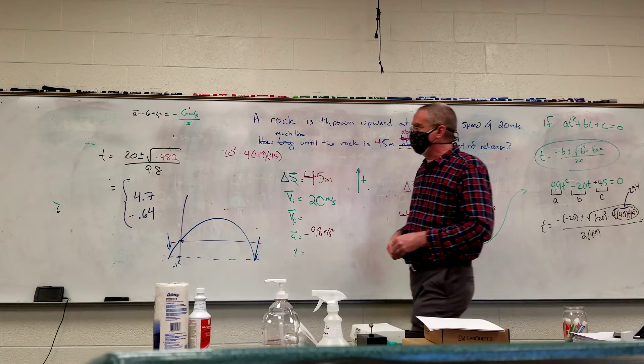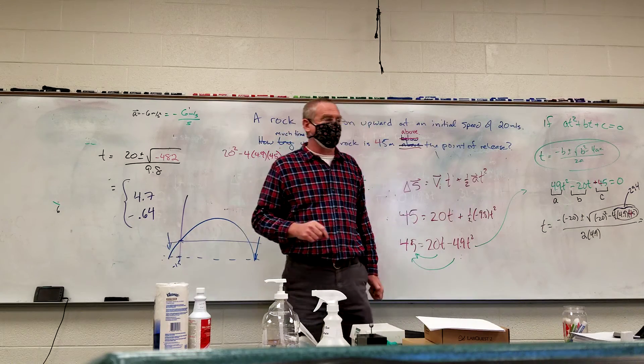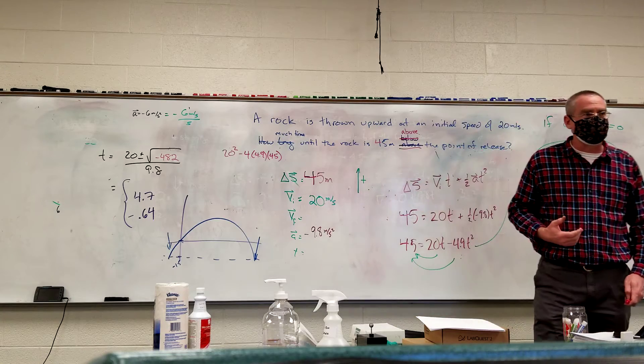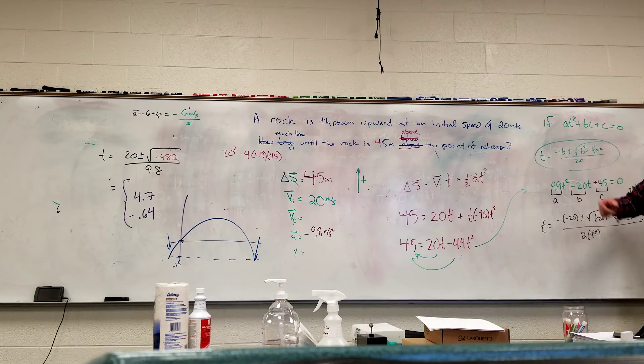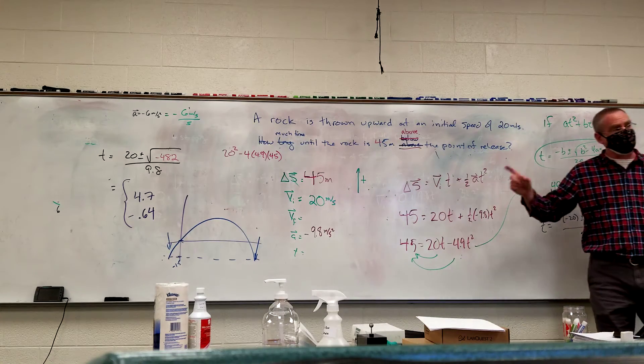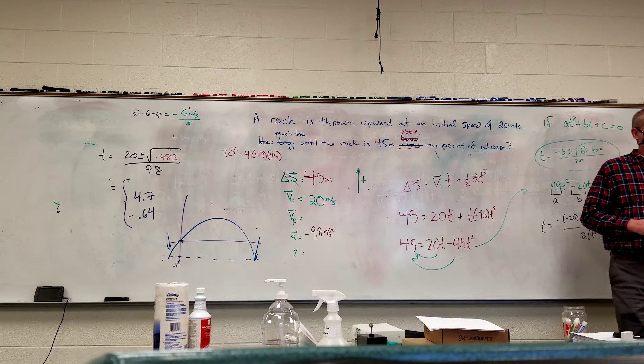So when you get the negative under the radical or you get the impossible, your calculator says no, I'm not going to do that. Again, it either means we made a mistake somewhere or the problem is impossible. In this case, the problem is impossible.